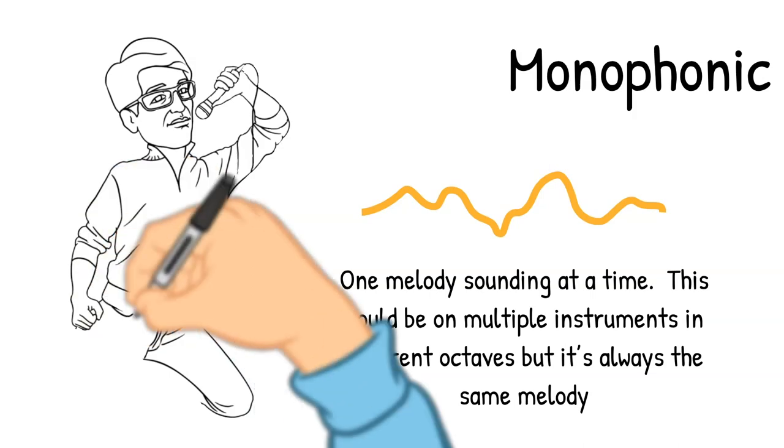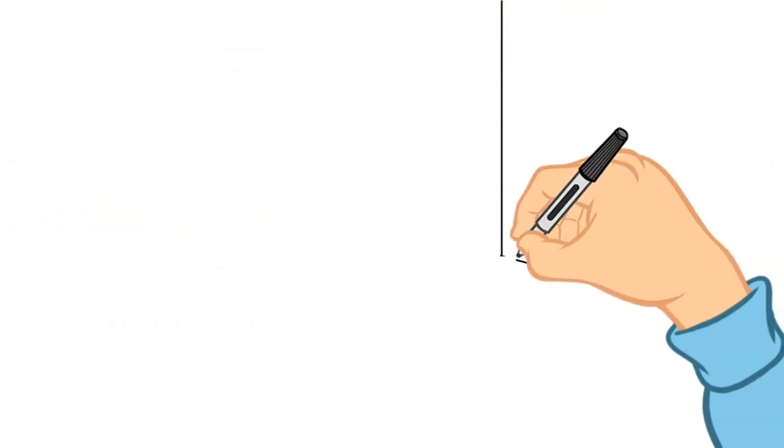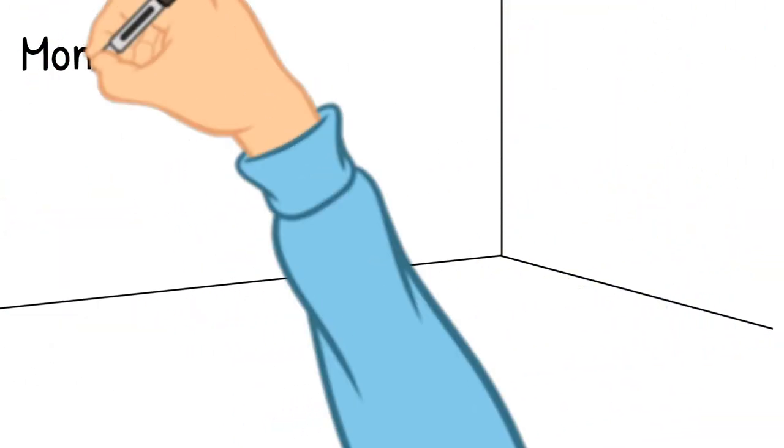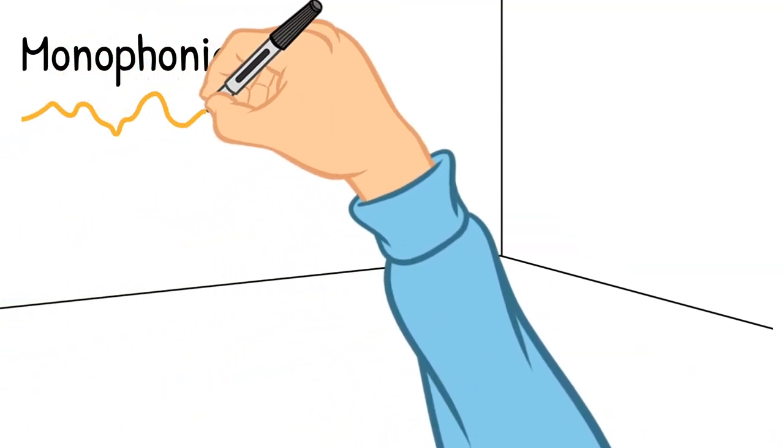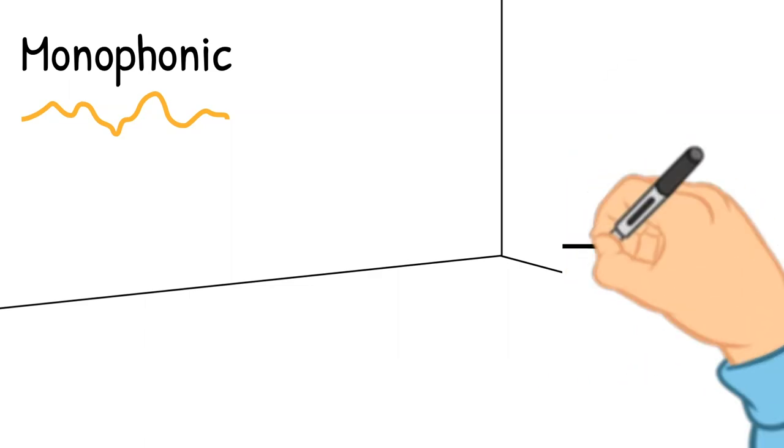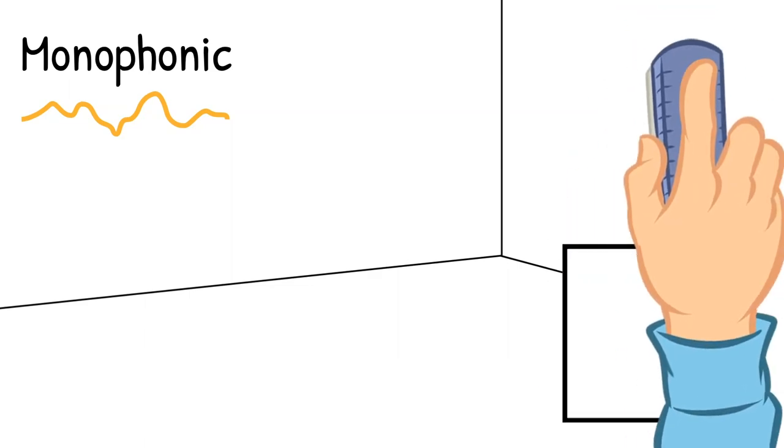The only slightly tricky thing when trying to identify monophonic music is that there might be a drum beat there. But because the drums aren't playing any note pitches, they're not really playing a tune. So it's still monophonic.